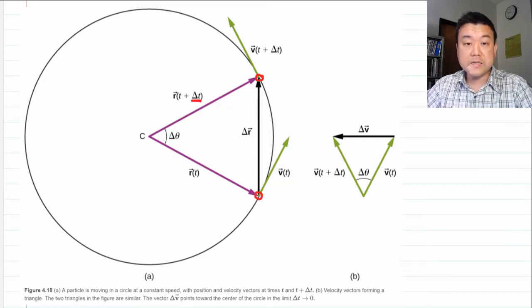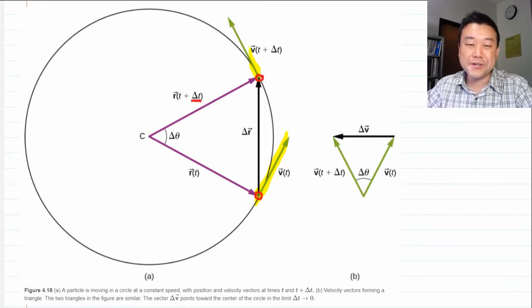The instantaneous velocity vector will always be tangent to the path. So that's why the velocity vector is drawn tangent to the circle at the point represented by the position of the particle.